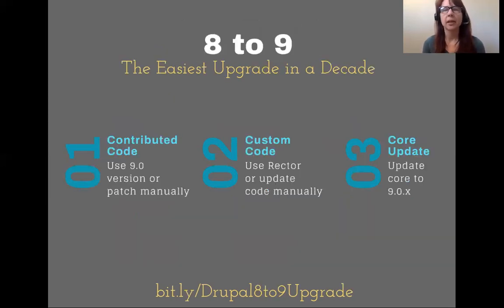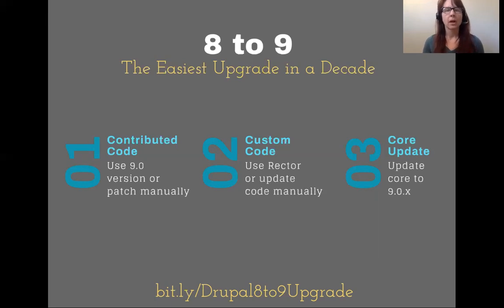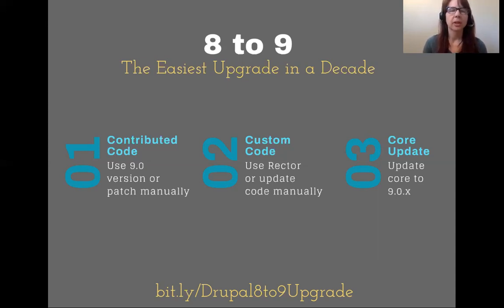For going from Drupal 8 to 9, it's the easiest upgrade in a decade. Get to Drupal 8.8 or 8.9 first. For contributed code, find the latest Drupal 9 version. If it's not available, use Rector — a tool that covers about 50% of cases automatically. You can also manually make changes by looking at change records. For custom code, same deal: run Rector or manually make changes from change records. Then update core to Drupal 9.